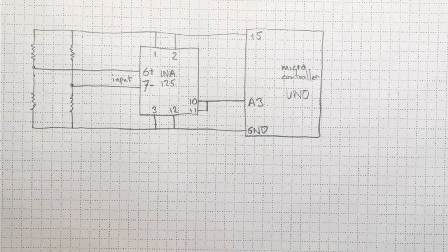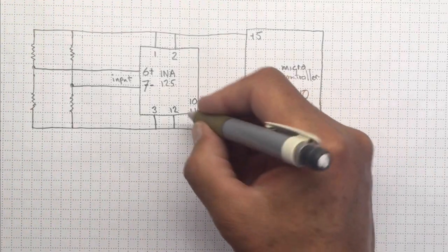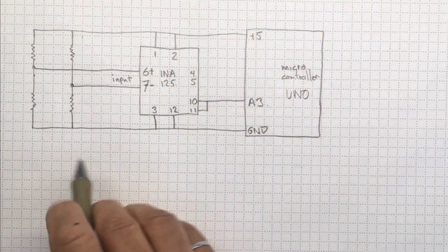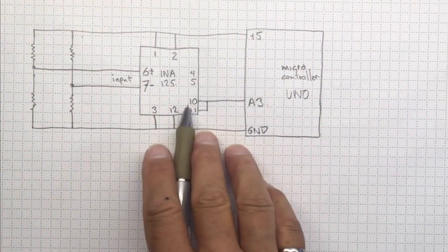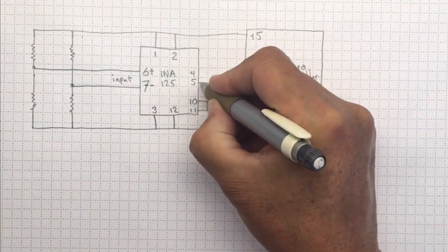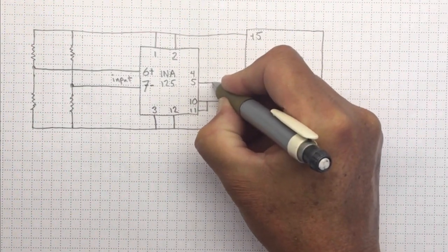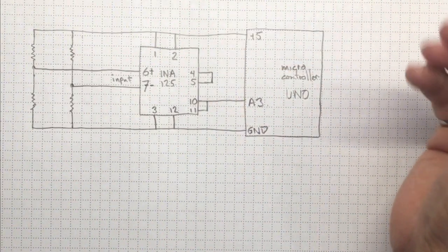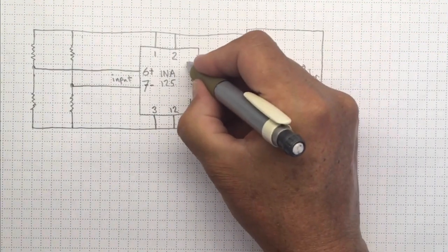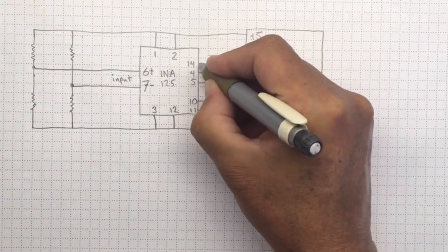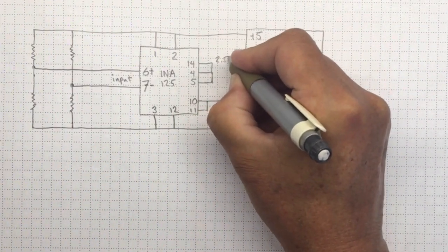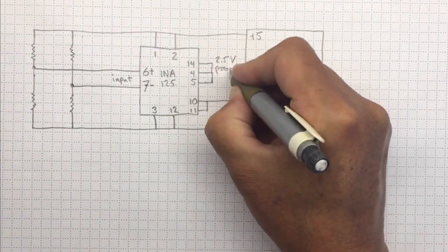And finally, we're going to use a pseudo ground reference. And so we need to connect pins 4 and 5, which are the reference pins that tell us what the output should be relative to. They need to be connected not only to each other, but to the reference voltage that the INA-125 provides on pin 14. That's a 2.5 volt pseudo ground reference.